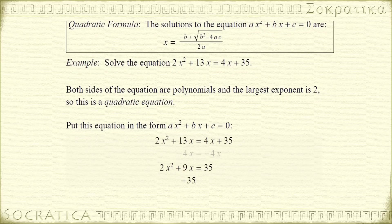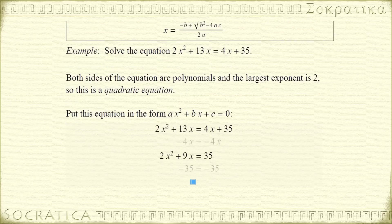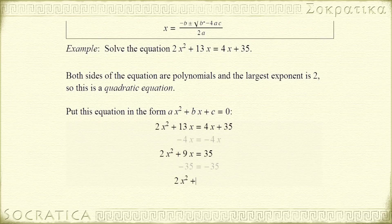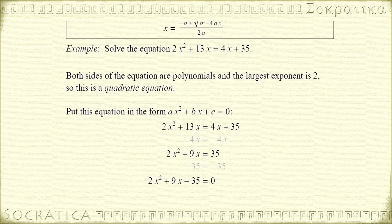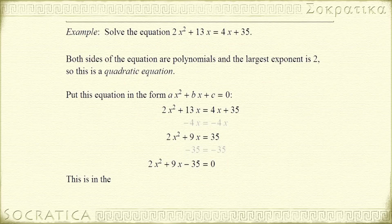Now we get rid of the 35 on the right-hand side. To do this, we subtract 35 from both sides of this equation. There's no constant term on the left-hand side, so we can't combine it with any of the other terms, so we're left with 2x squared plus 9x minus 35 on the left-hand side. And on the right, 35 minus 35 equals 0. So now the right-hand side has been cleared out and our equation is in the right form, so we can use the quadratic formula.